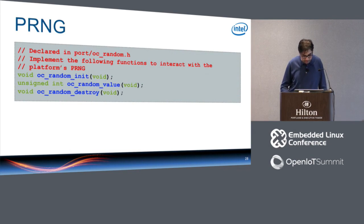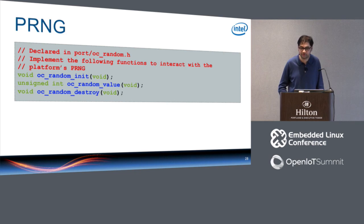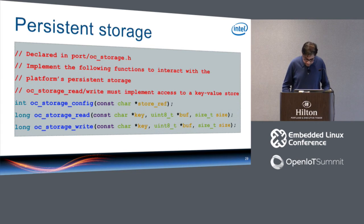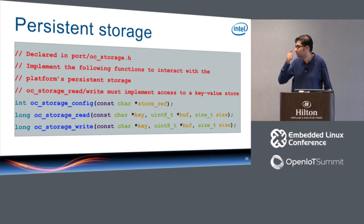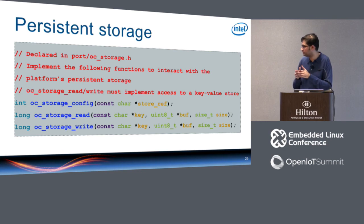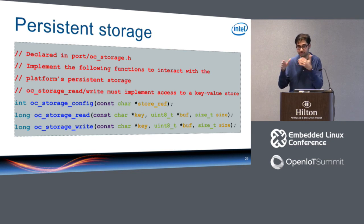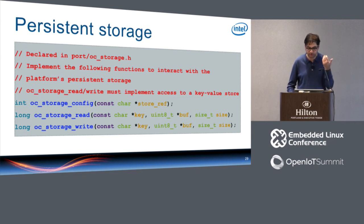The random number generator interface allows you to employ any seeding strategy during initialization; the framework calls oc_random_value to obtain an unsigned integer. The persistent storage interface: oc_storage_config implements an initialization function taking a reference to an area of storage. oc_storage_read and oc_storage_write must implement access to a key-value store, since the framework internally reads from and writes to keys.